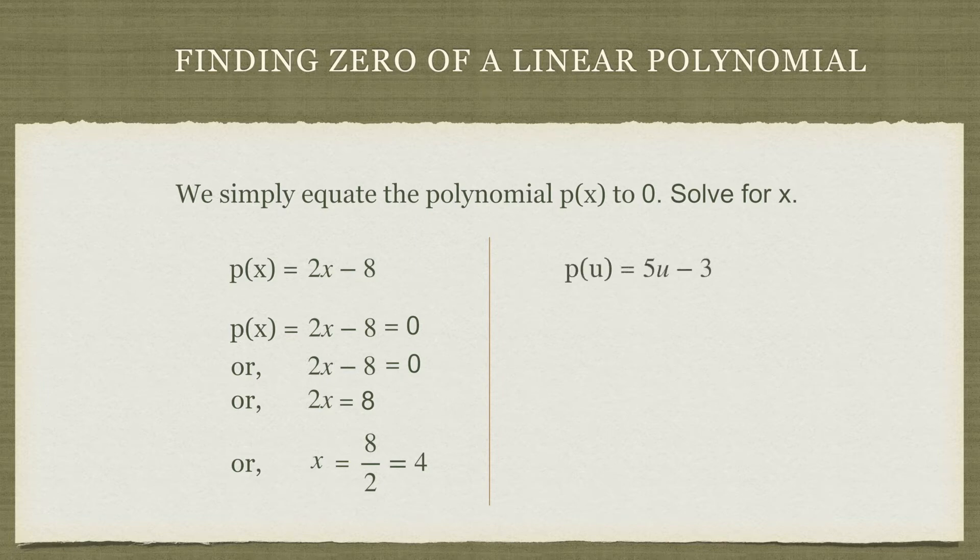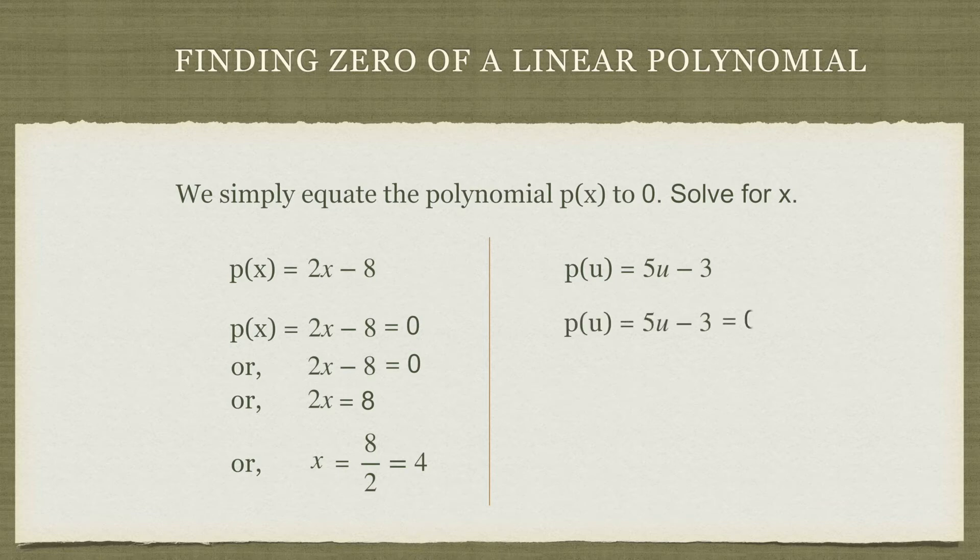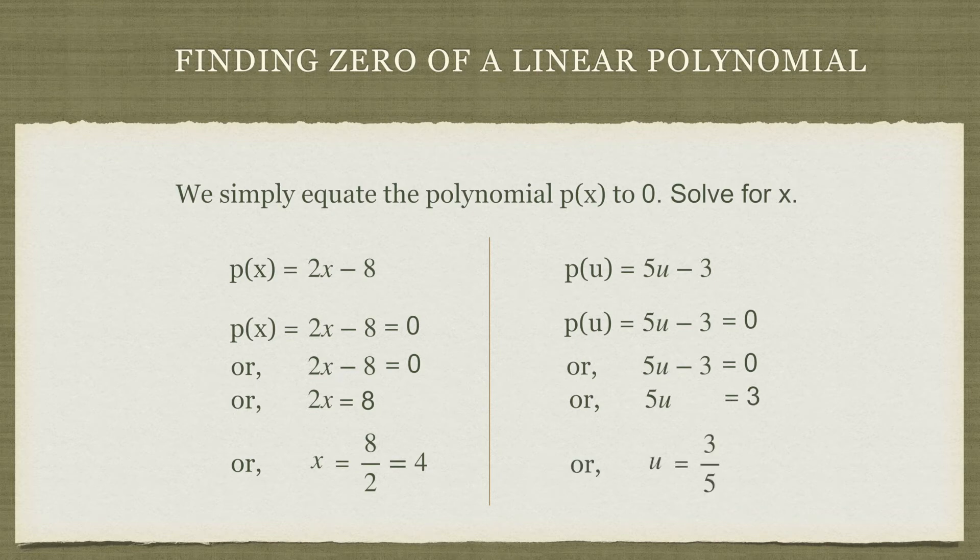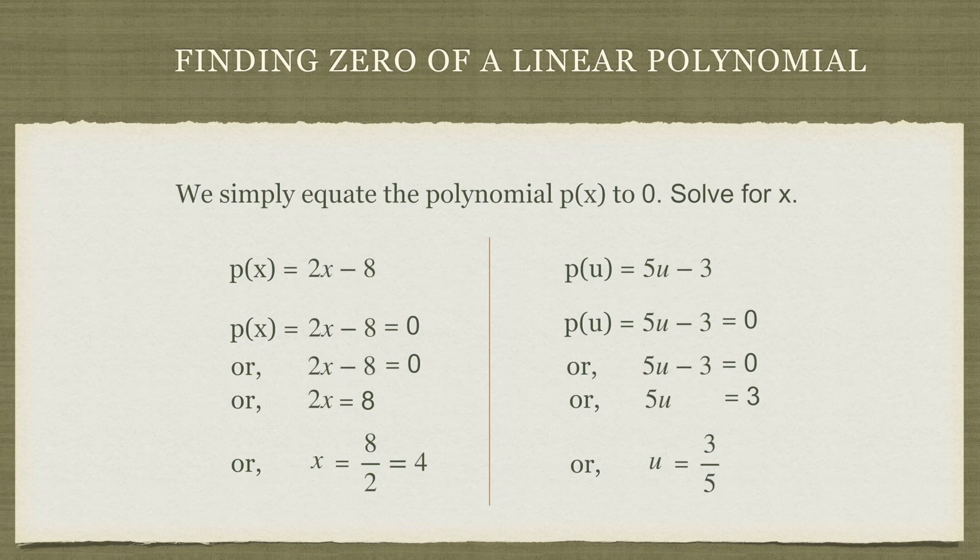Let's take a look at one other example. This time our variable is u. So p(u) equals 5u minus 3. We equate 5u minus 3 to zero. We have 5u minus 3 equals zero, or 5u equals 3, or u simply equals 3 divided by 5. So 3 divided by 5 is the zero of the polynomial 5u minus 3.